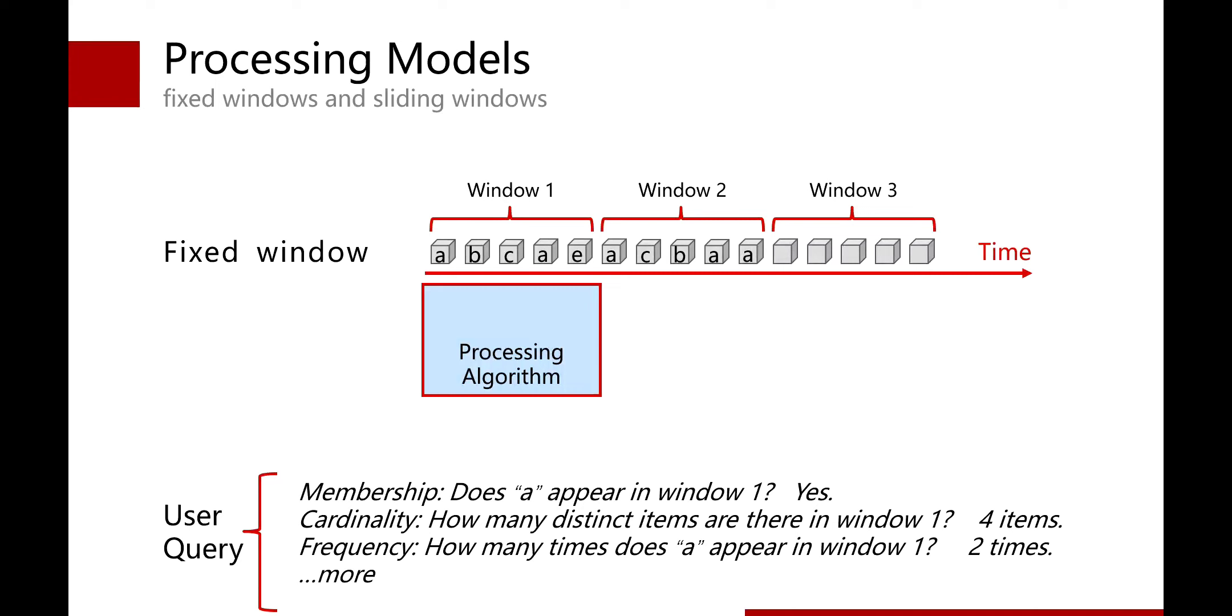There are many kinds of user queries. For example, the membership query asks whether one item appears in one specific window. The cardinality query asks the number of distinct items in one window. Now, we show how the processing algorithm works by an example.